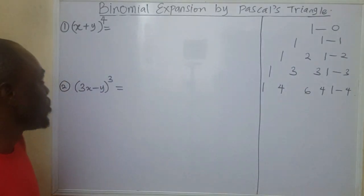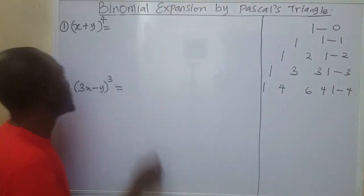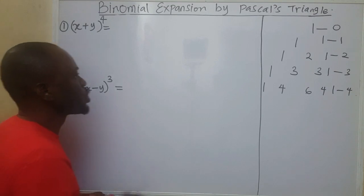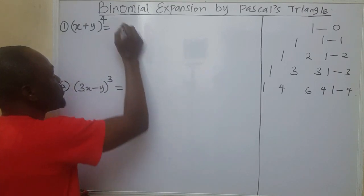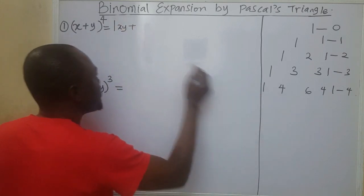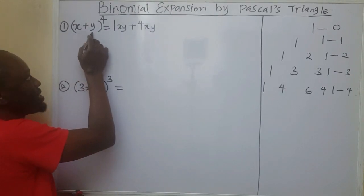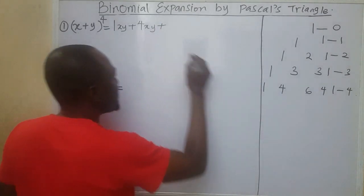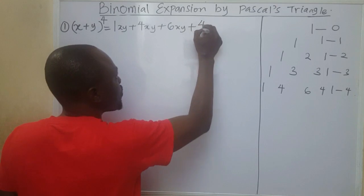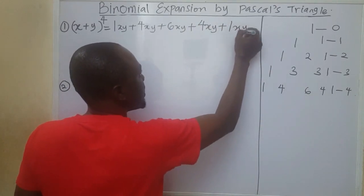Now let's solve the problem. All of this represents the coefficient of x and y. I have a power of 4, so I'll start with the coefficient of 1 and write x, y. Then plus 4 x, y — taking the first and the second variable. Then plus 6 x, y. Then plus 4 x, y. Then plus 1 x, y.